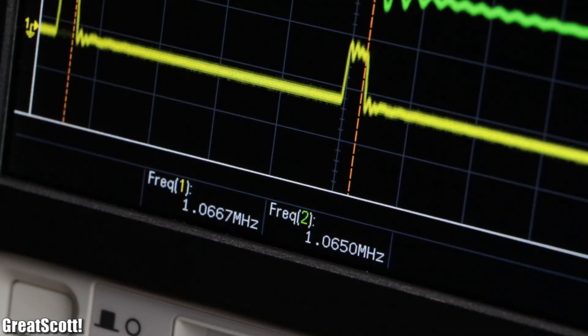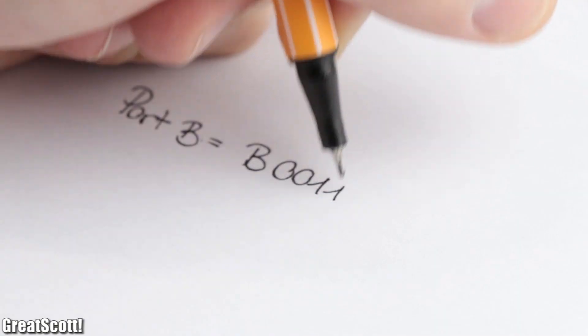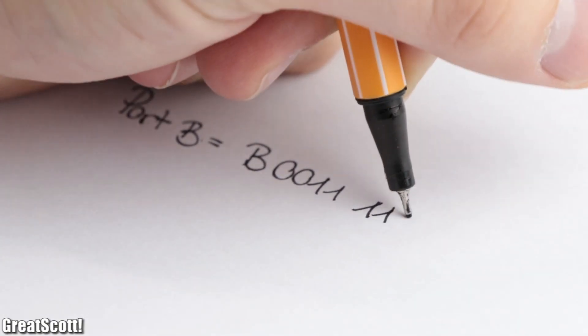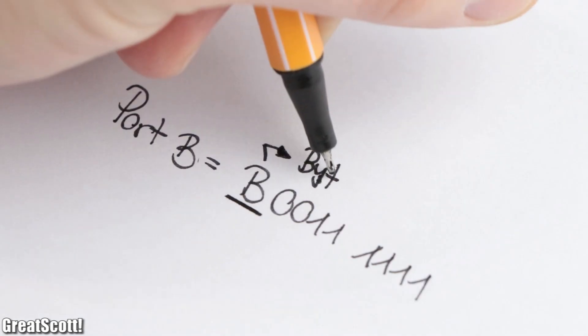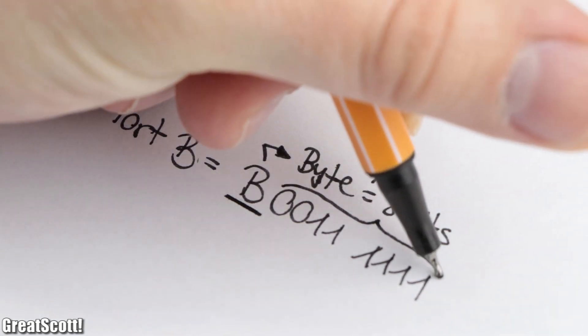Which is as you can see a lot quicker than using the digital write function. And just in case you are wondering what the B in front of the bit stands for, it means bytes which is a variable type that consists of 8 bits.